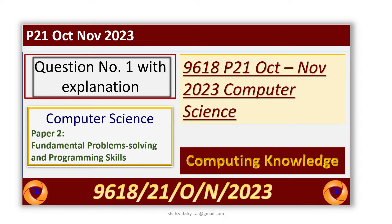Bismillahirrahmanirrahim. In this video session, I am going to explain AS paper 2, variant 21 and question number 1 with explanation. Dear student, first of all, I will explain the question and I will give you the answer. After this, I will provide the solutions in Python. I will try my best to give the answer relevant to the questions.